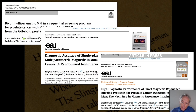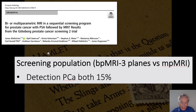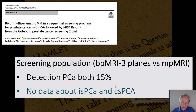Since the narrative review of the pilot steering committee, three other papers have appeared. The first one is by Waldström, and they evaluated a screening population comparing bi-parametric three-plane MRI versus multi-parametric MRI. The detection rate of both techniques for any cancer was 15%. Unfortunately, they did not specify which patients had an insignificant cancer and which had a clinically significant cancer.